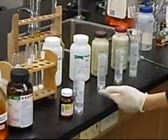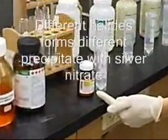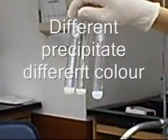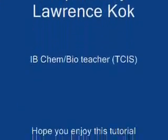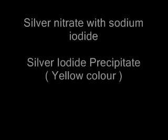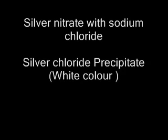So in conclusion, different halide salts react with silver nitrate to produce different precipitates. The precipitates are also different in color. End of this video tutorial. Thank you.